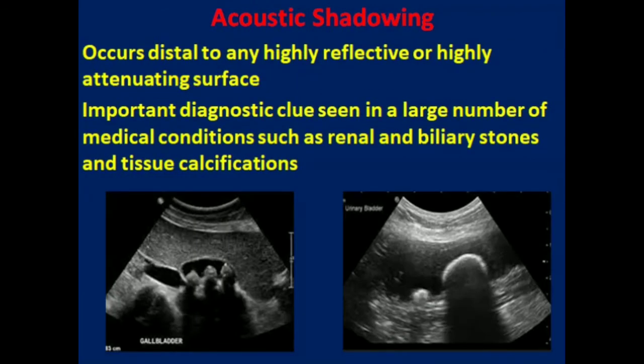Another term is acoustic shadowing. This occurs distal to any highly reflective or highly attenuating surface. It is an important diagnostic clue seen in a large number of medical conditions such as renal and biliary stones, and also in tissue calcifications.